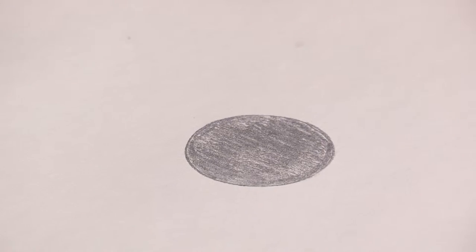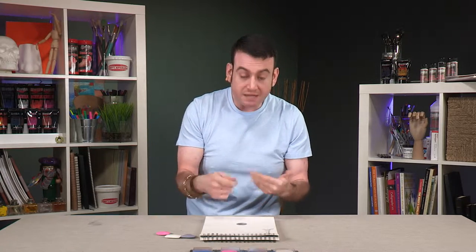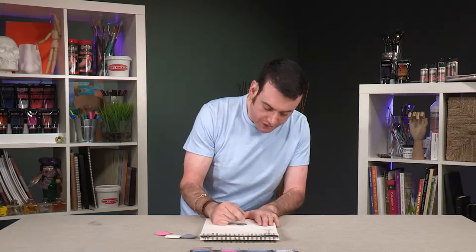Now I have a circle here and we want to turn it into a sphere. To turn a circle into a sphere you've got to find a point of light, and that point of light will make the object look more round than flat. We're going to simulate that by taking up some of the graphite.